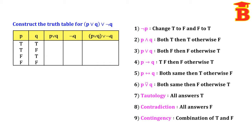P and Q are two statements, so there are four possibilities: TT, TF, FT, FF. See the question and take the table: first bracket P OR Q, then NOT Q, and finally (P OR Q) OR NOT Q. For P OR Q: both false then false, otherwise true. Only in the last row we have both false, so that answer is false, all others true. For NOT Q: change T to F and F to T giving F, T, F, T. Connect these two using OR: both false then false, otherwise true. We don't have both false anywhere, so all the answers are true.